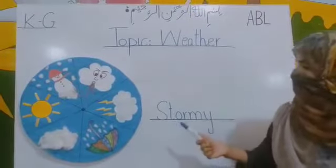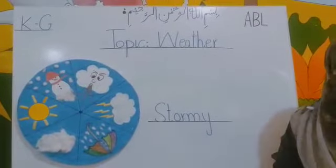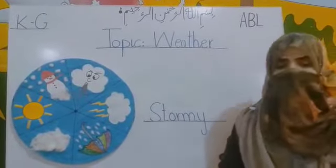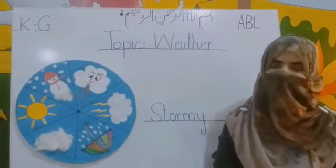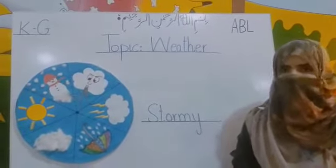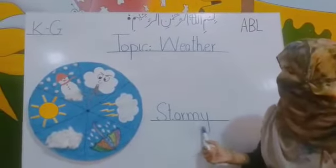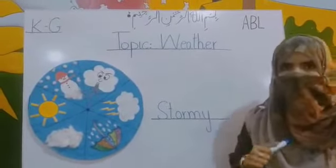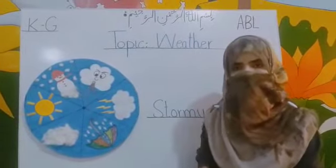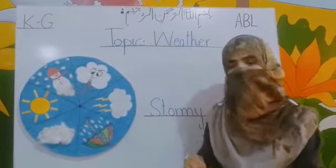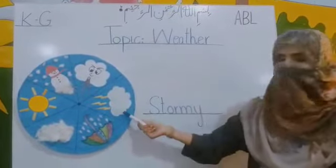Next is stormy. When we see thunder and lightning coming out of the clouds, we say it's stormy.